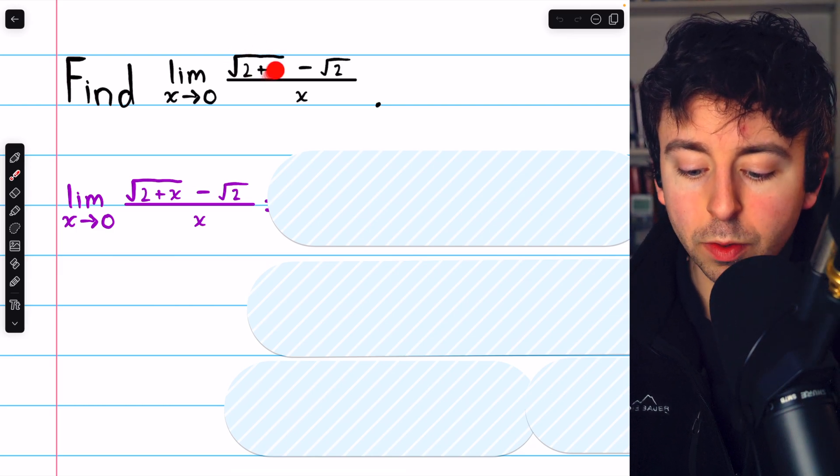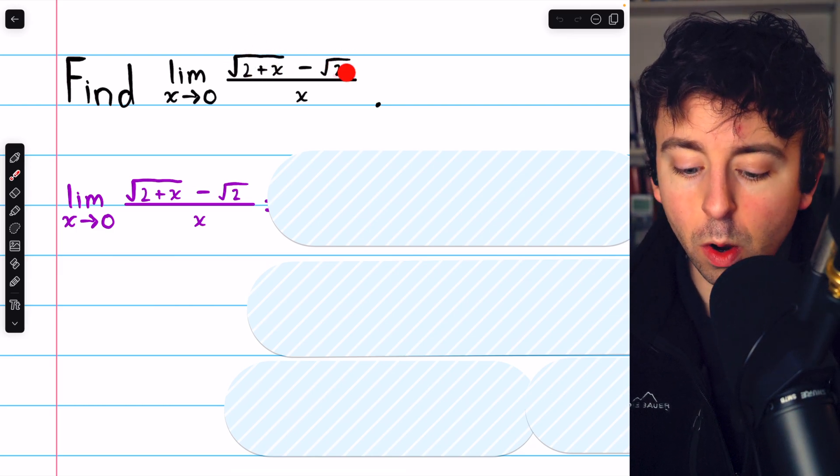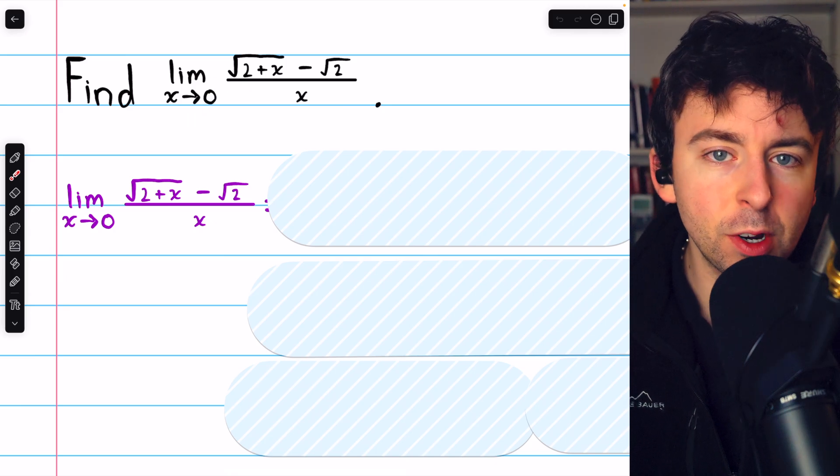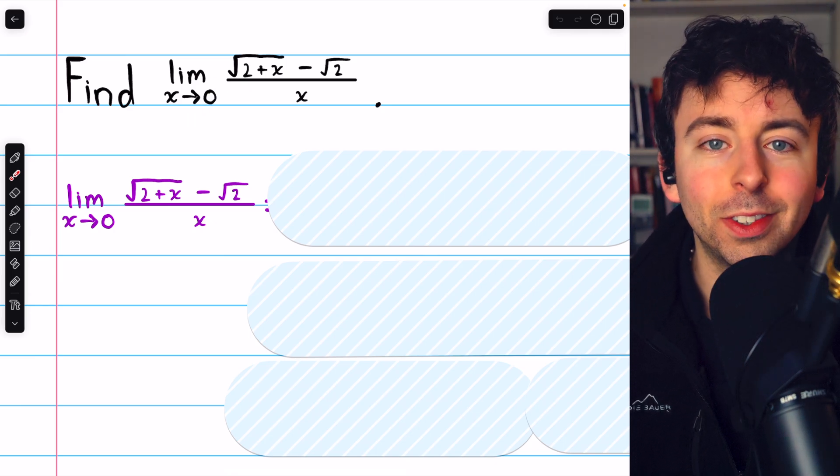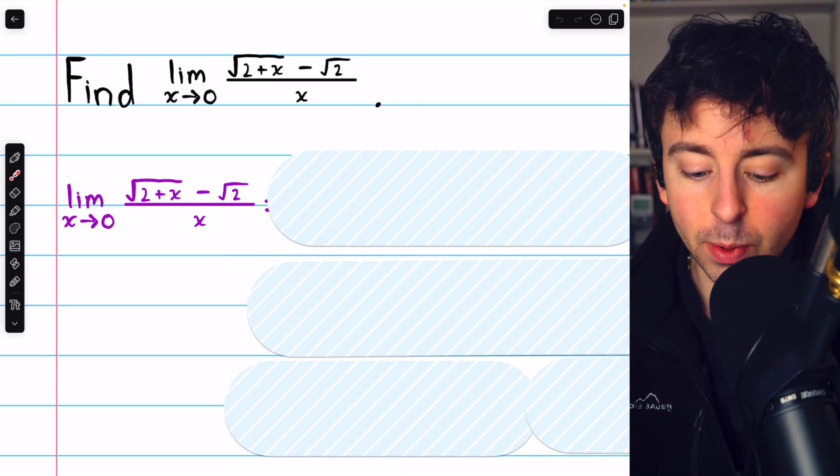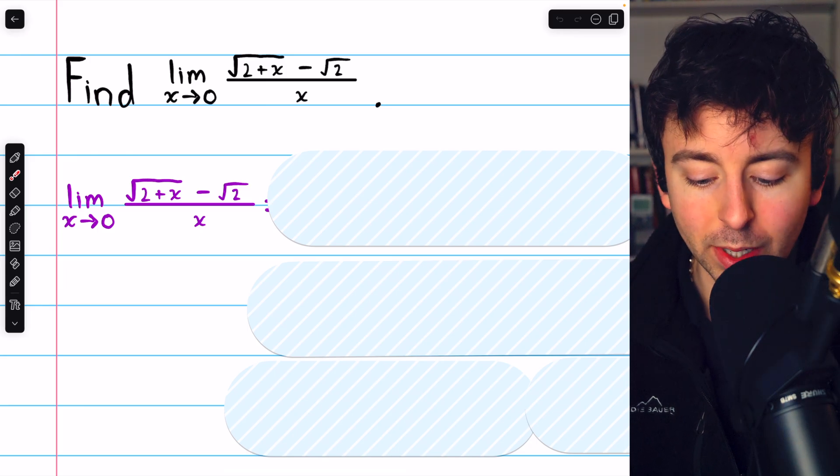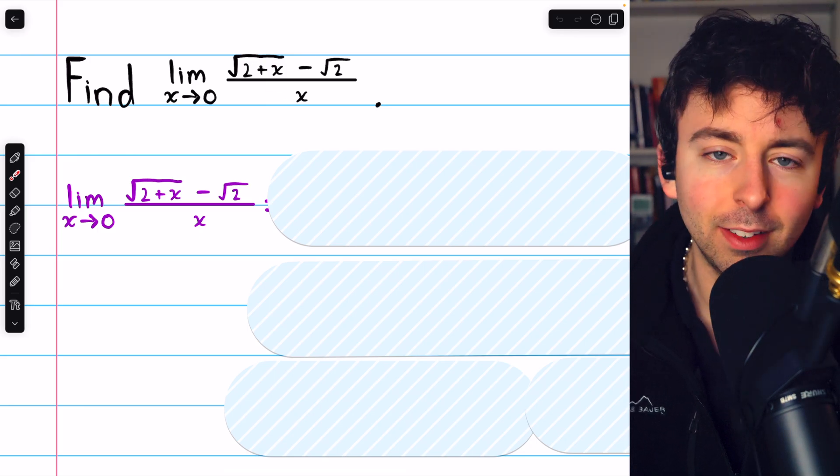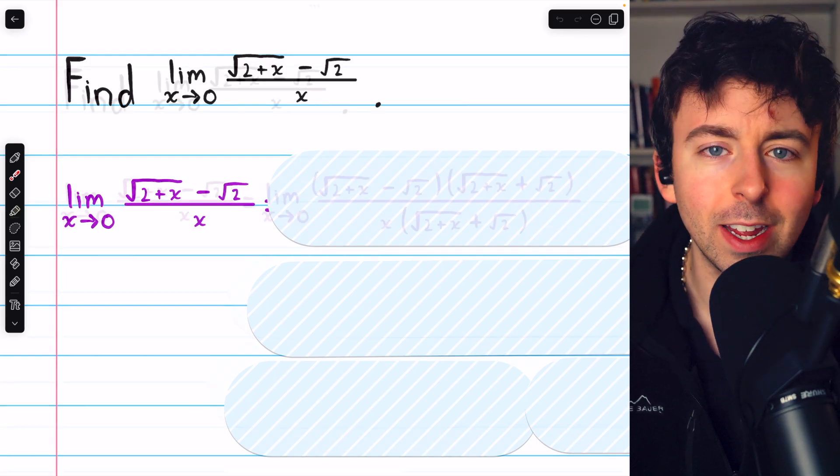To find the limit of (√(2+x) - √2)/x as x approaches 0, we'll need to use what's called the conjugate. We can't just plug 0 in because we would get 0 divided by 0, so we will have to do some work here.